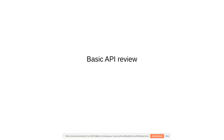I want to briefly talk about the basic API of scikit-learn. Scikit-learn contains many different machine learning models, particularly for classification and regression, but also for clustering, dimensionality reduction, manifold learning, and all kinds of textbook algorithms. These come together with tools for pre-processing, model selection, cross-validation, grid search, and so on.